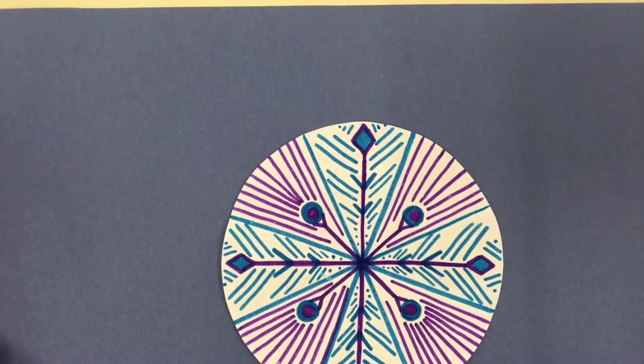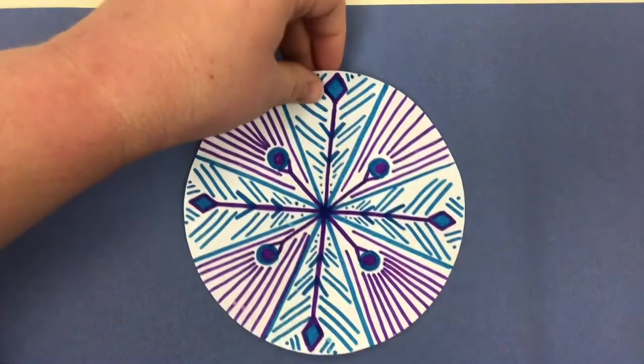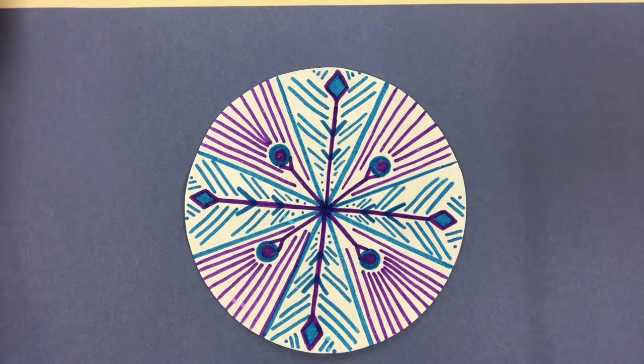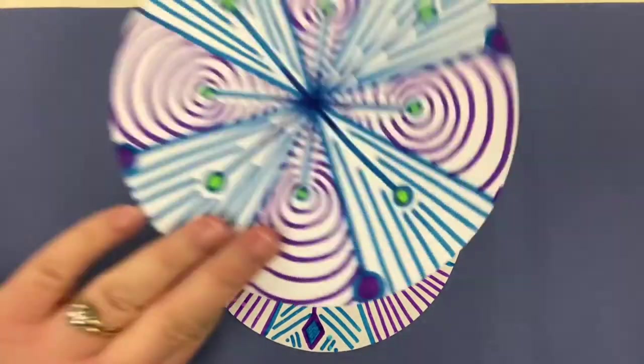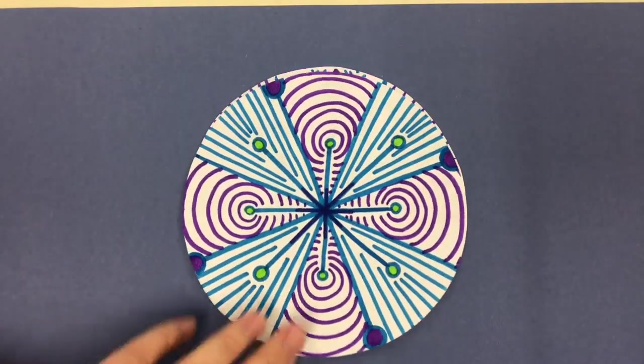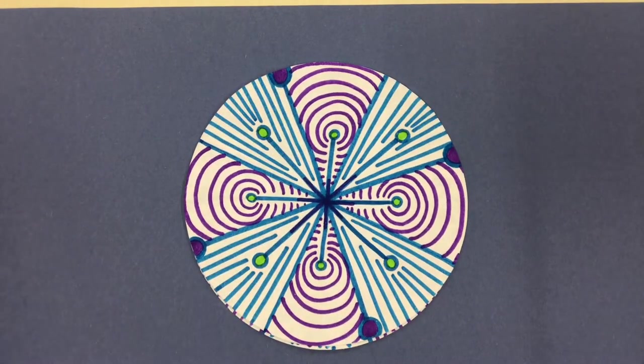Hey friends, today we are going to be creating snowflakes that have radial balance with cool colors, lines, and shapes. So here's one of my examples that was just done with markers. Here's another example that was just done with markers.